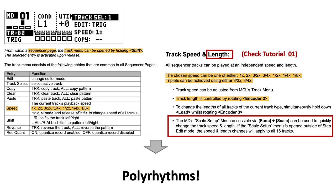The next topic is speed per track, where you can change the speed of each track individually. Combining individual speed and track length can give you access to polyrhythmical stuff. Both features can also be accessed by entering the scale menu by pressing function and scale.